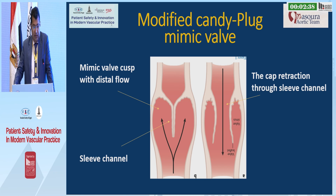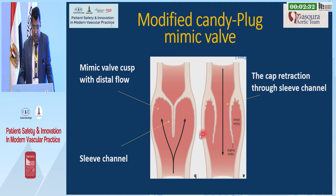The modified candy plug mimics a valve: the cap retracts through the sleeve channel, then after blood flows upward it closes this channel.